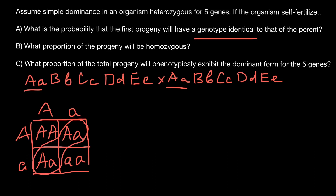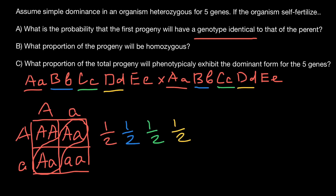As you see, this is the same as two out of four. And the same probability we are going to get for gene B — it's also going to be one half. The same probability for gene C, it's going to be one half. And for gene D, it's going to be one half. And the same probability for gene E, it's also going to be one half.